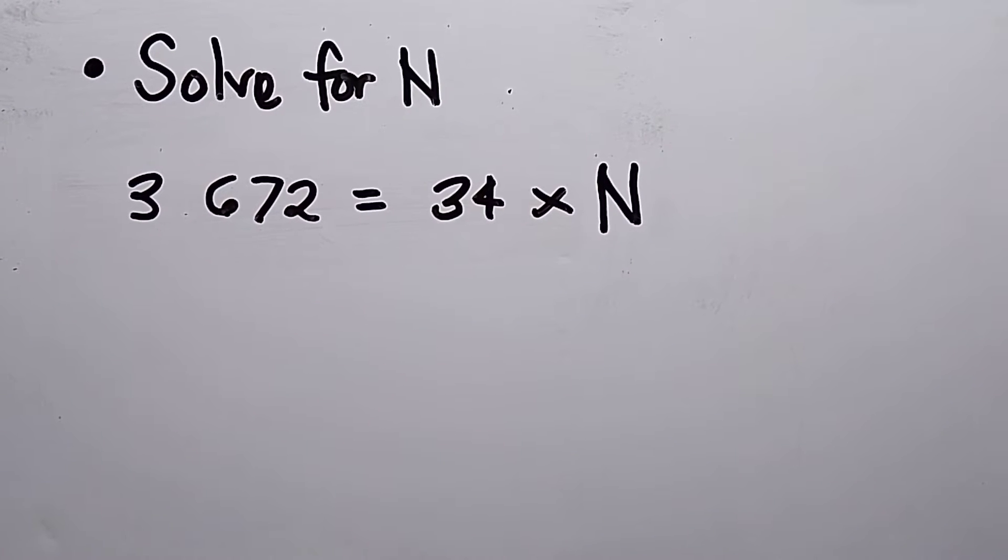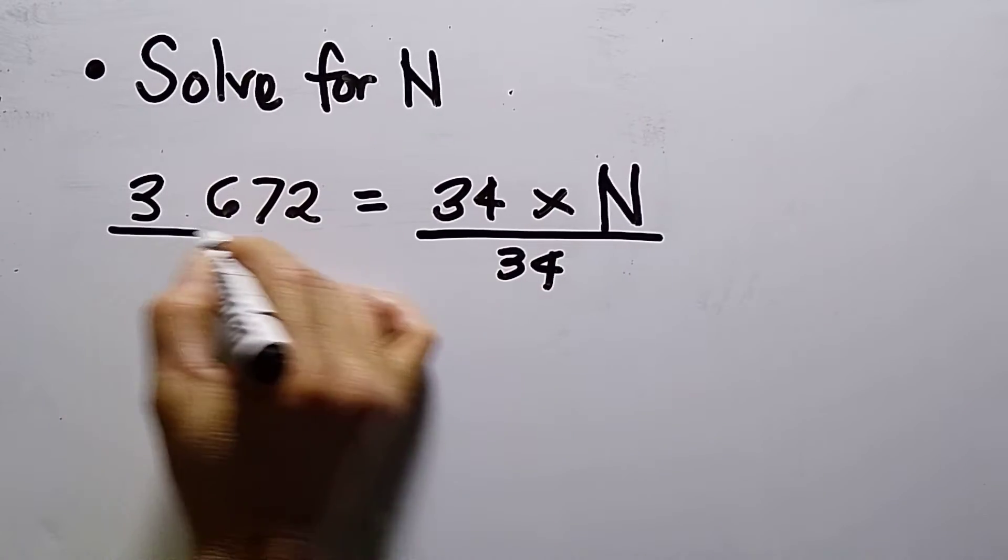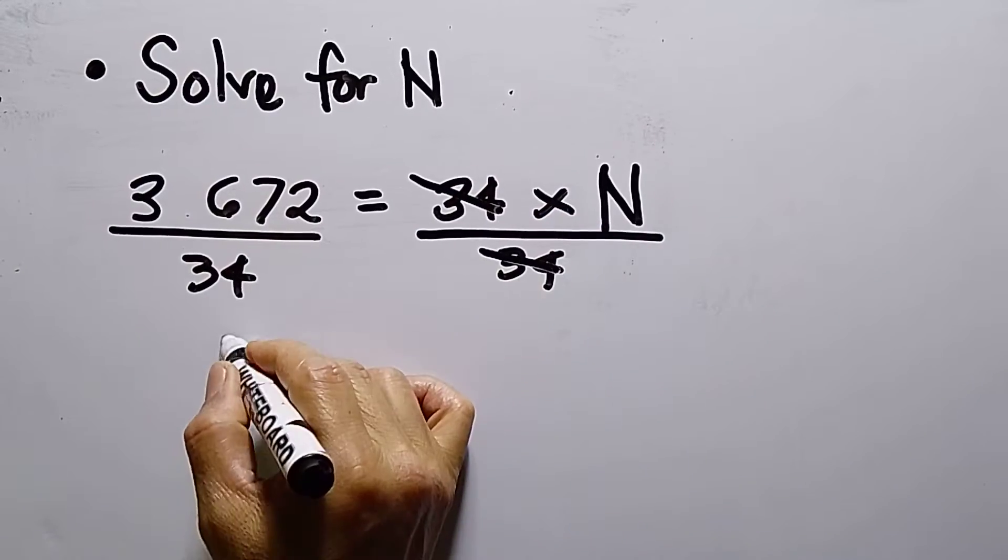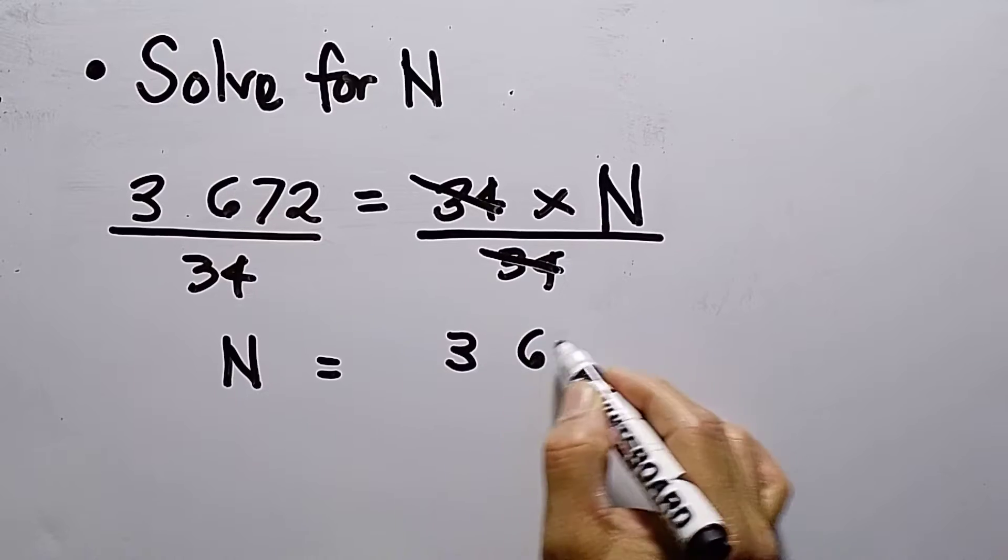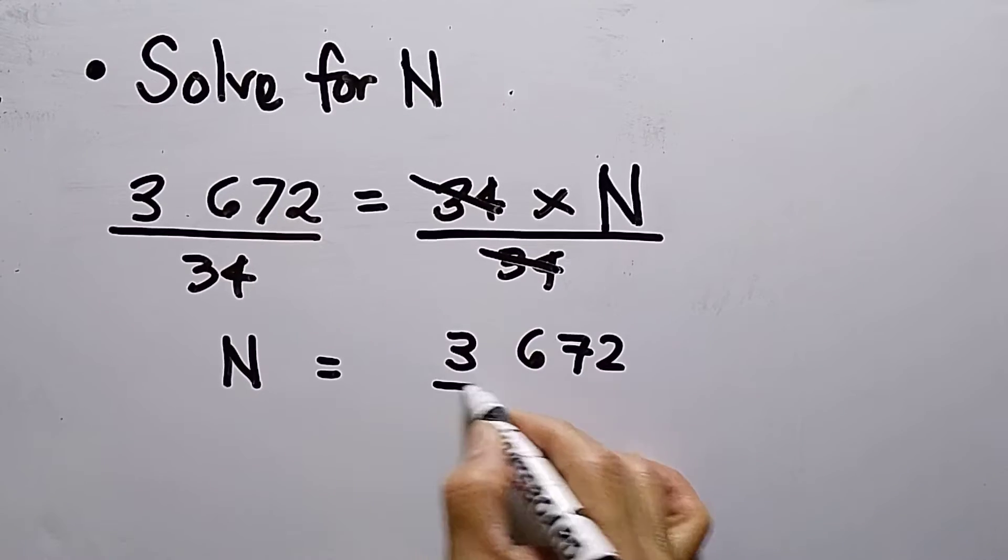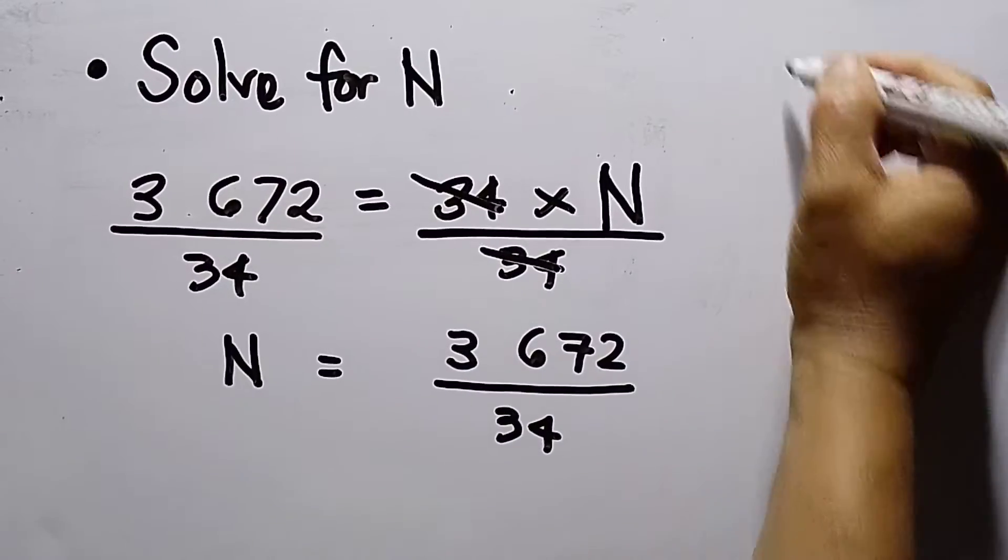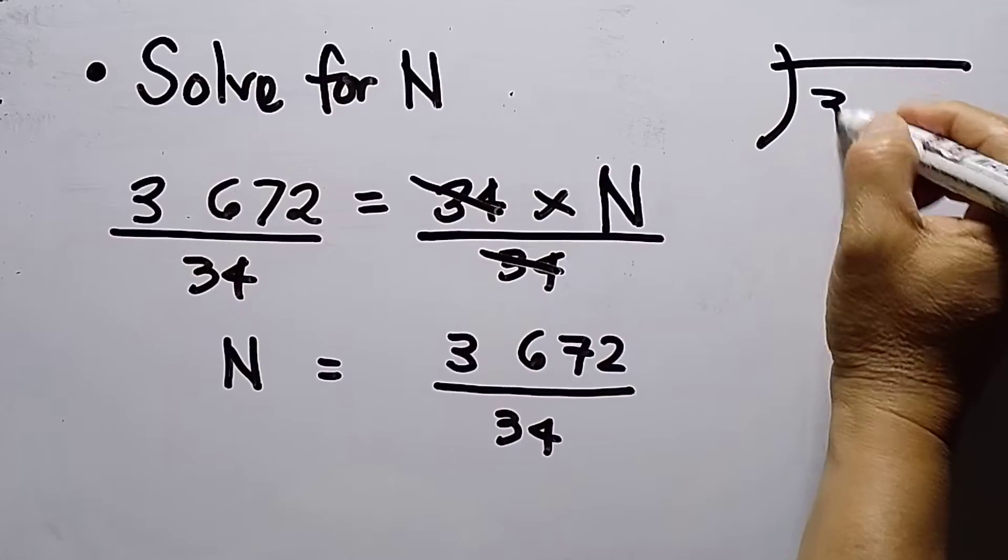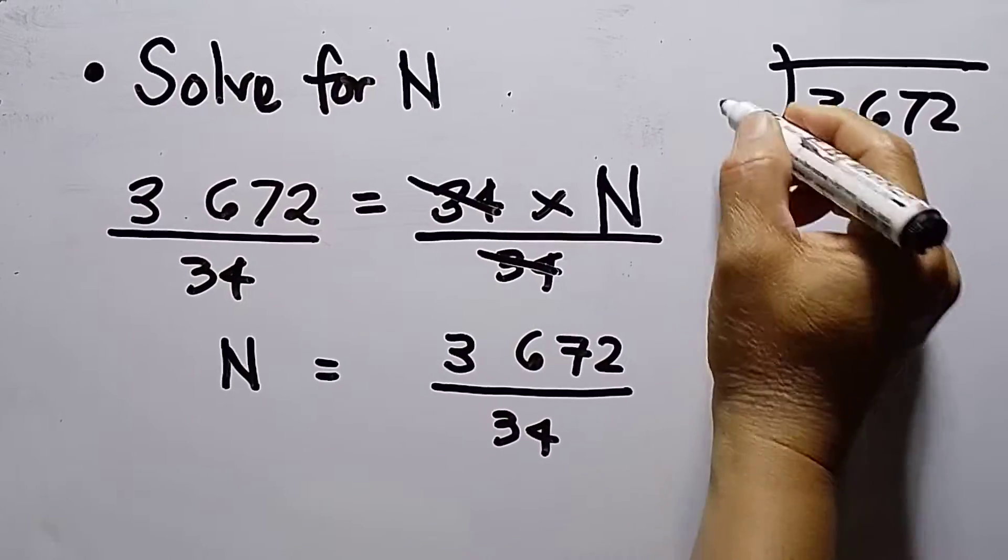So how to solve this question? Divide both sides by 34, so this will be crossed out. Now I have N is equal to 3672 divided by 34. So I need to divide 3672, my divisor is 34.